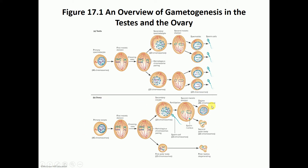In oogenesis, a primary oocyte with 46 chromosomes goes through the first meiotic division, including crossing over, to make a secondary oocyte and a first polar body. Polar bodies are not going to mature into anything of importance. The significance of the first polar body is simply to get rid of excess genetic material, and it will degenerate.